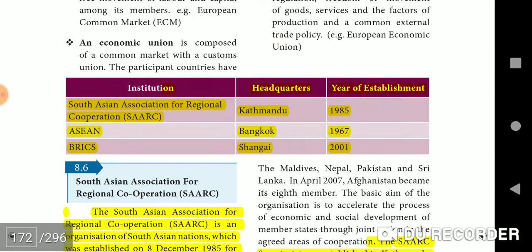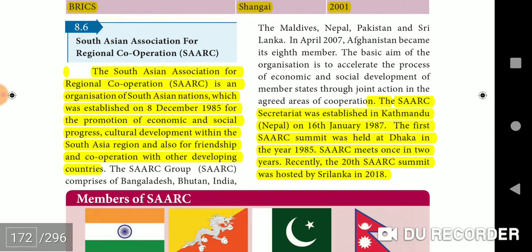Regional institutions overview: South Asian Association for Regional Cooperation (SAARC) — Headquarters Kathmandu, established 1985. ASEAN — Bangkok, 1967. BRICS — Shanghai, 2001.